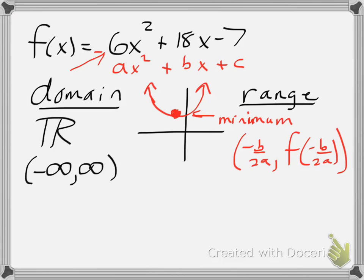My b value is 18, so opposite of 18 becomes negative 18 over 2 times my a value being 6. So negative 18 twelfths, which I'll reduce to negative 3 halves. This is my opposite of b over 2a.